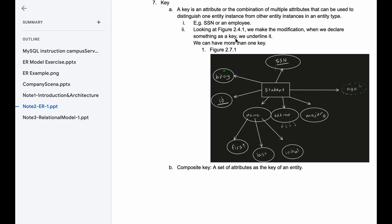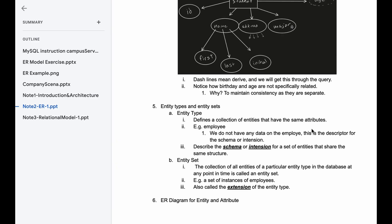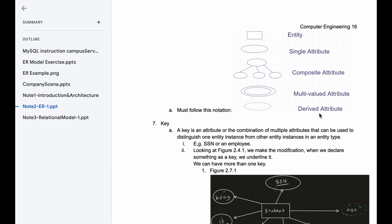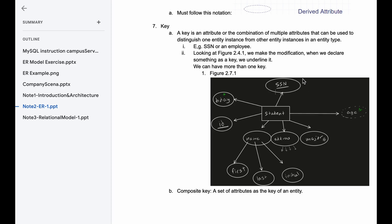Looking at our Figure 2.4.1, we make a modification. When we declare something as a key, we're going to underline it. So remember when we have something like this circled, we've talked about this previously. It's a derived attribute. When we have a key attribute, it's a solid circle with an underline under it. We can't have more than one key.